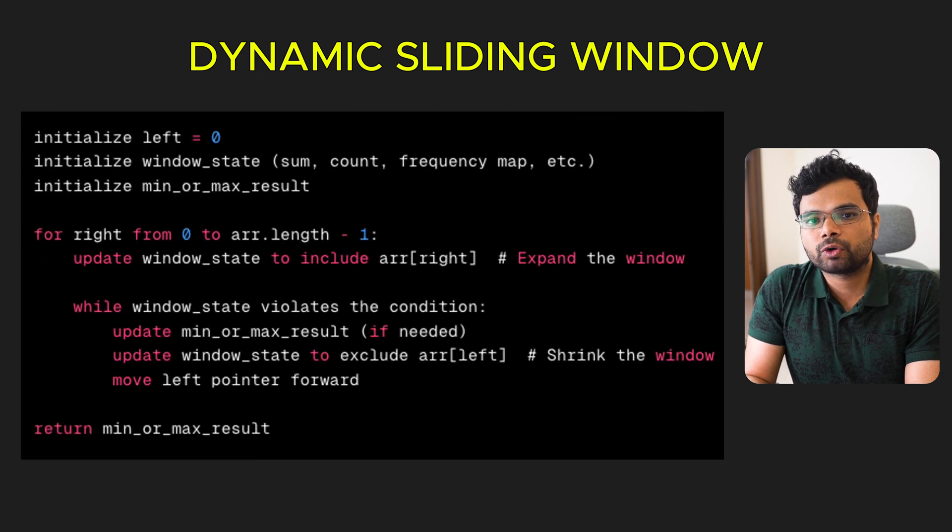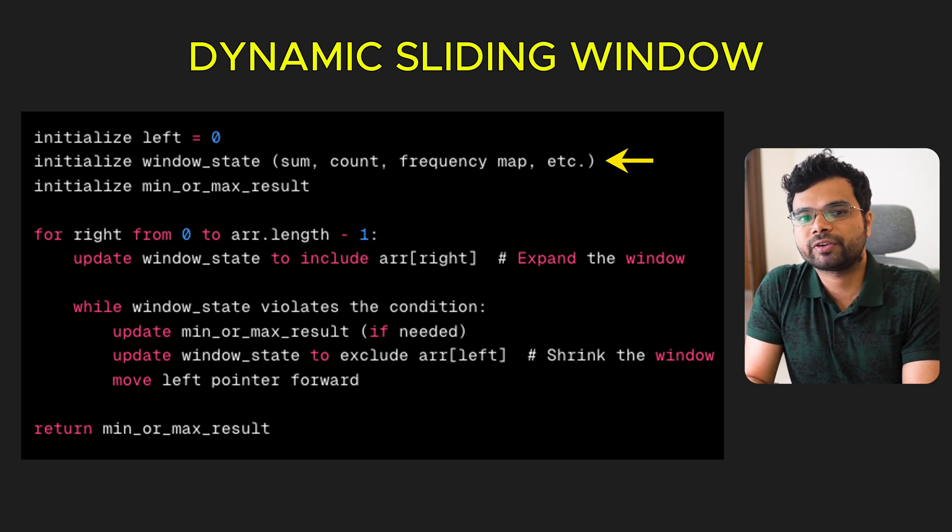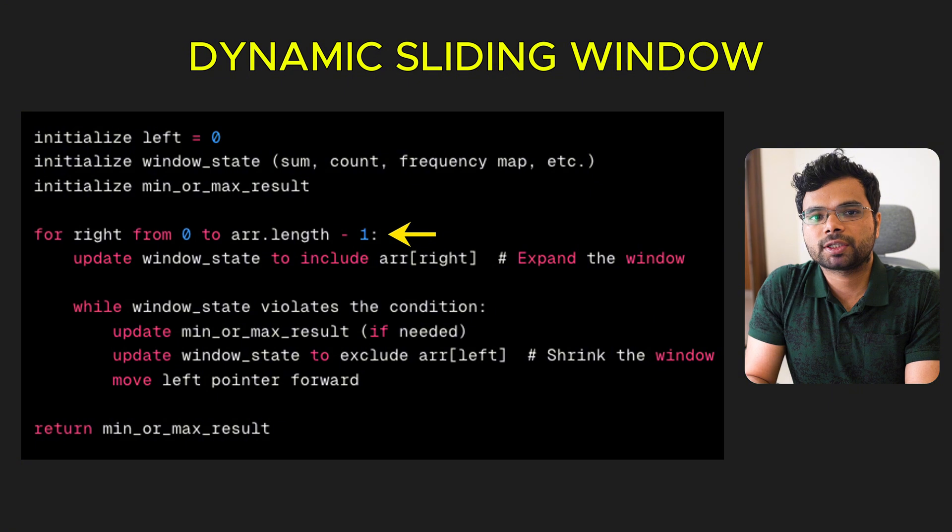Here is a generic template to solve dynamic window-related problems. Initialize the left pointer at the start of the data structure. Initialize variables to track the result and the window state such as sum, counter, frequency. Move the right pointer across the data structure like array or string. Expand the window by including the current element.